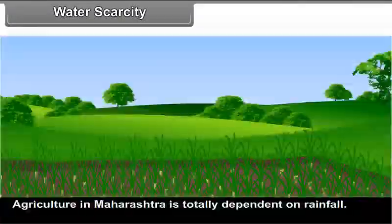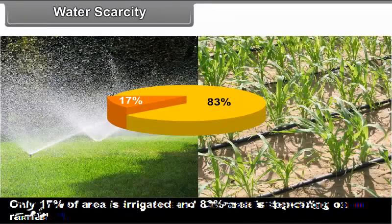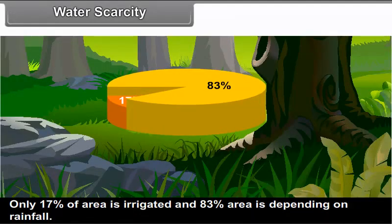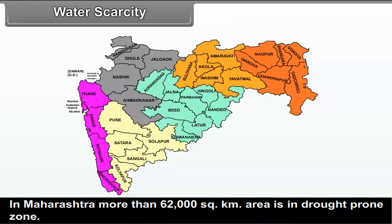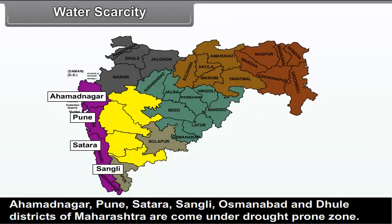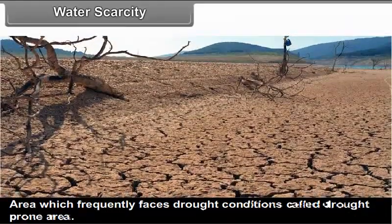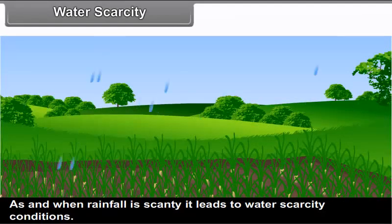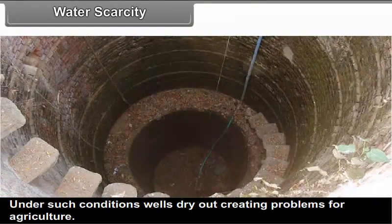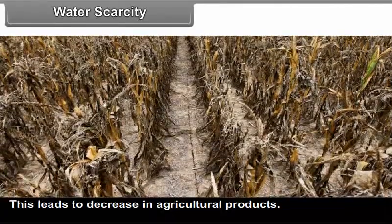Water scarcity: Agriculture in Maharashtra is totally dependent on rainfall. Only 17% of area is irrigated and 83% depends on rainfall. In Maharashtra, more than 62,000 square kilometers area is drought prone zone. Ahmadnagar, Pune, Satara, Sangli, Osmanabad and Latur districts come under drought prone zone. An area which frequently faces drought conditions is called a drought prone area. When rainfall is scanty, it leads to water scarcity — wells dry out, creating problems for agriculture and leading to a decrease in agricultural products.